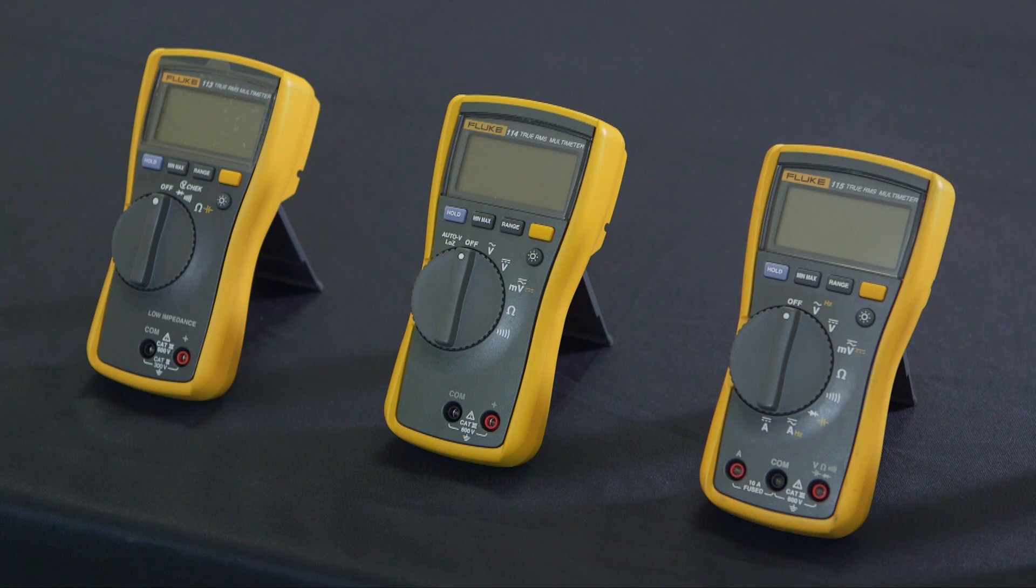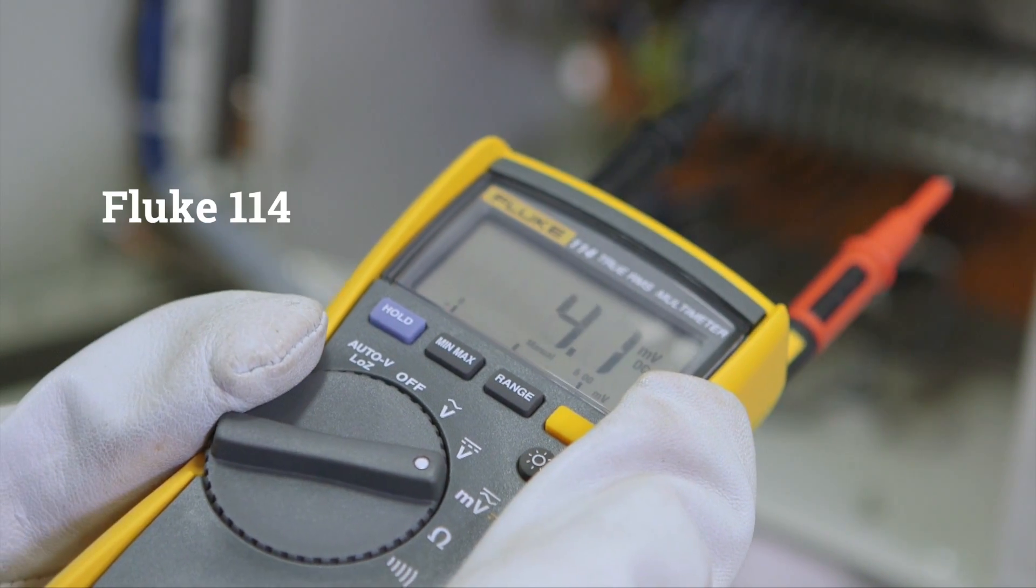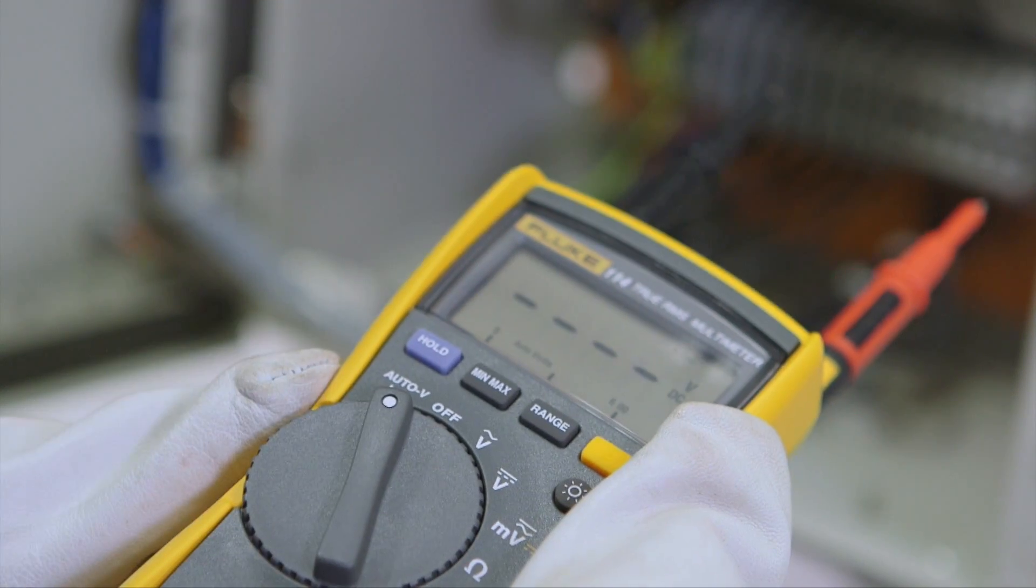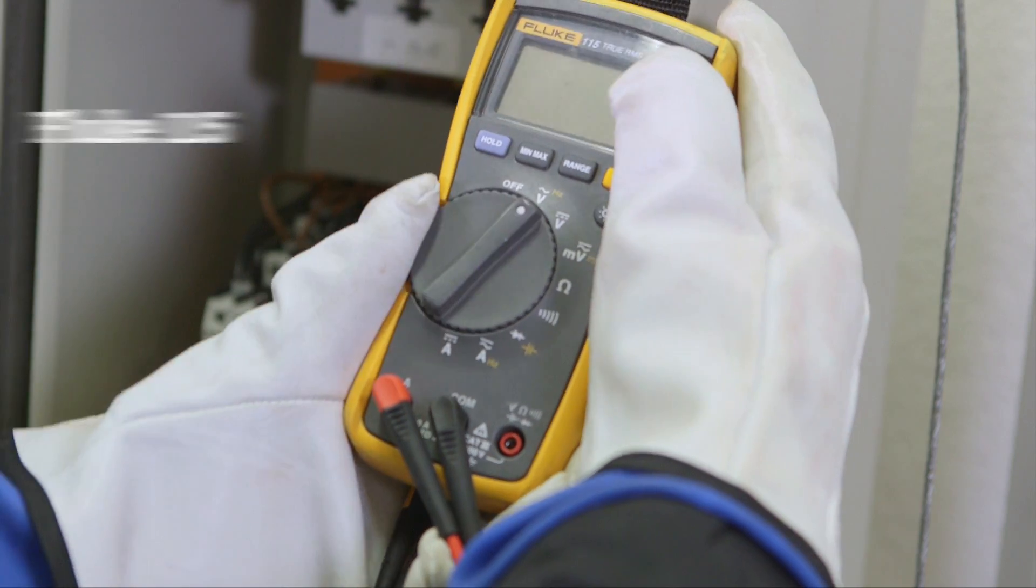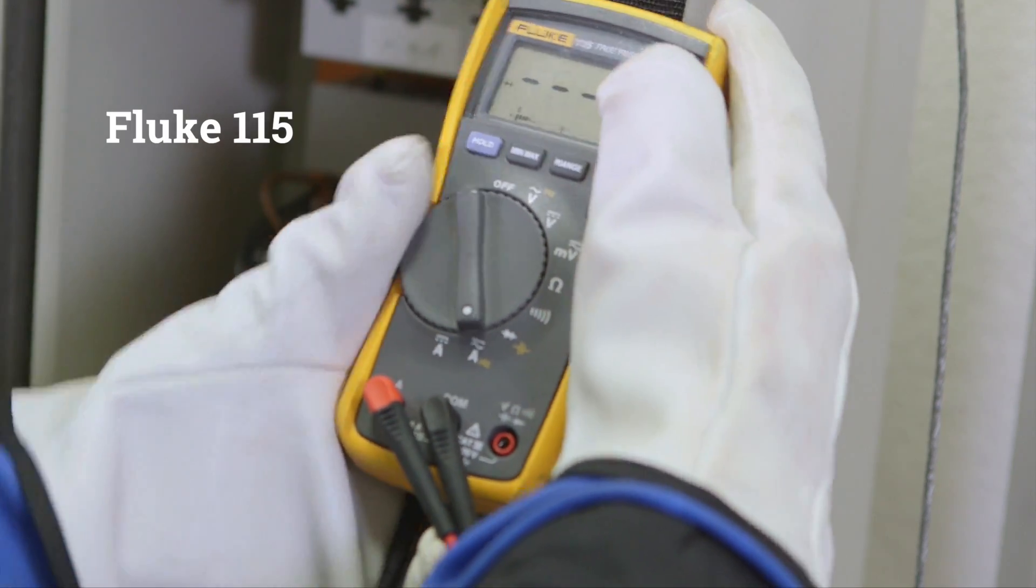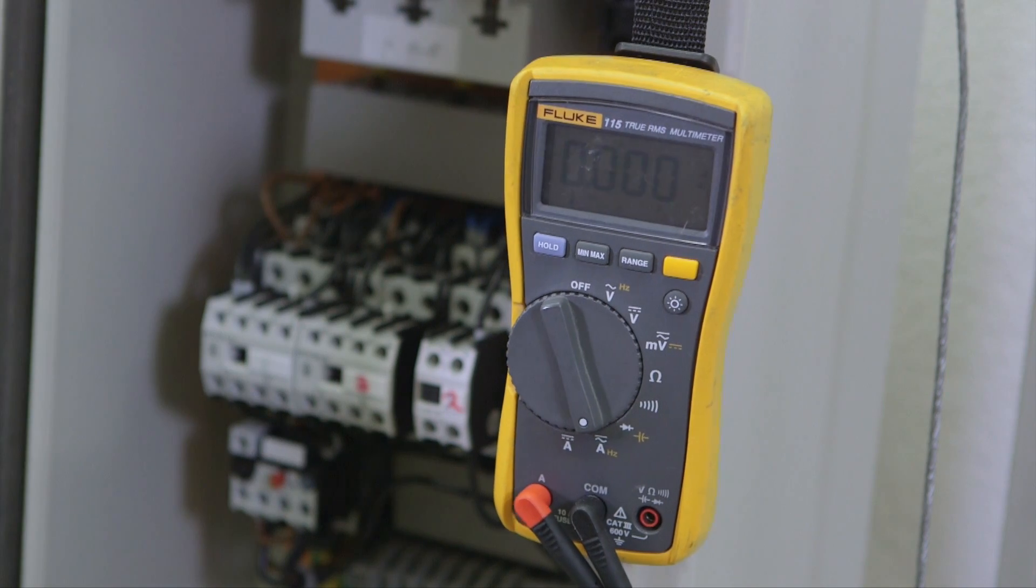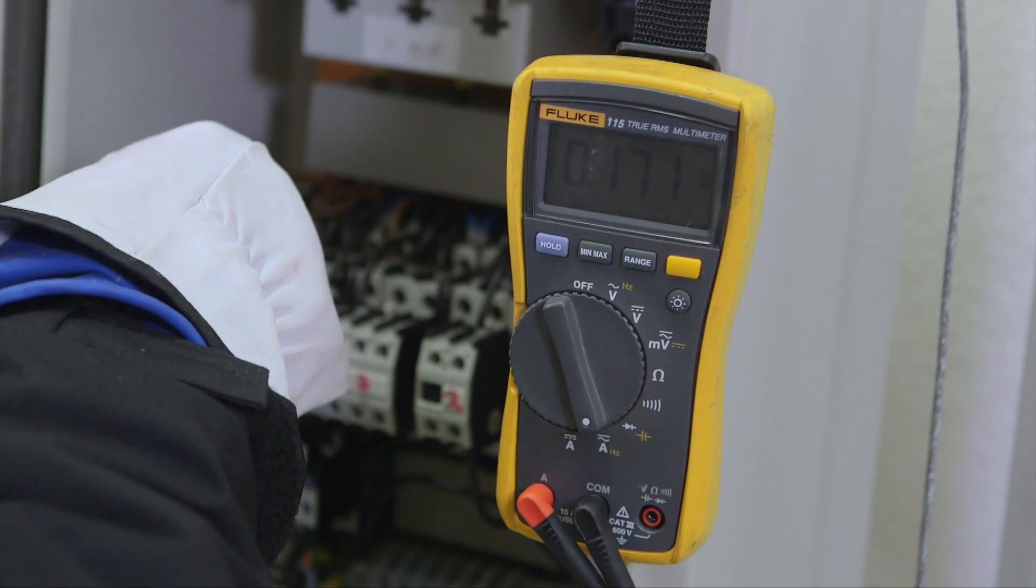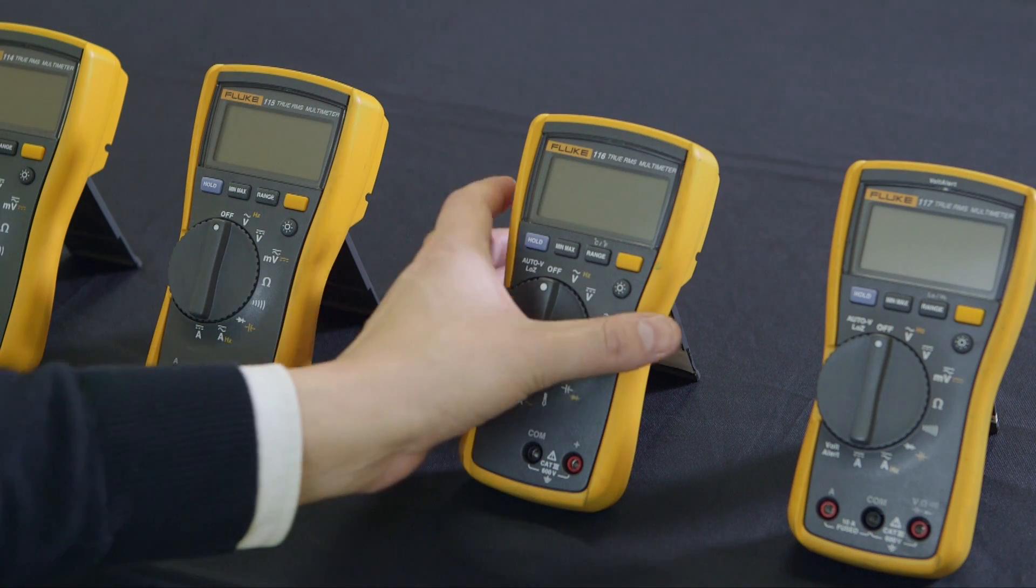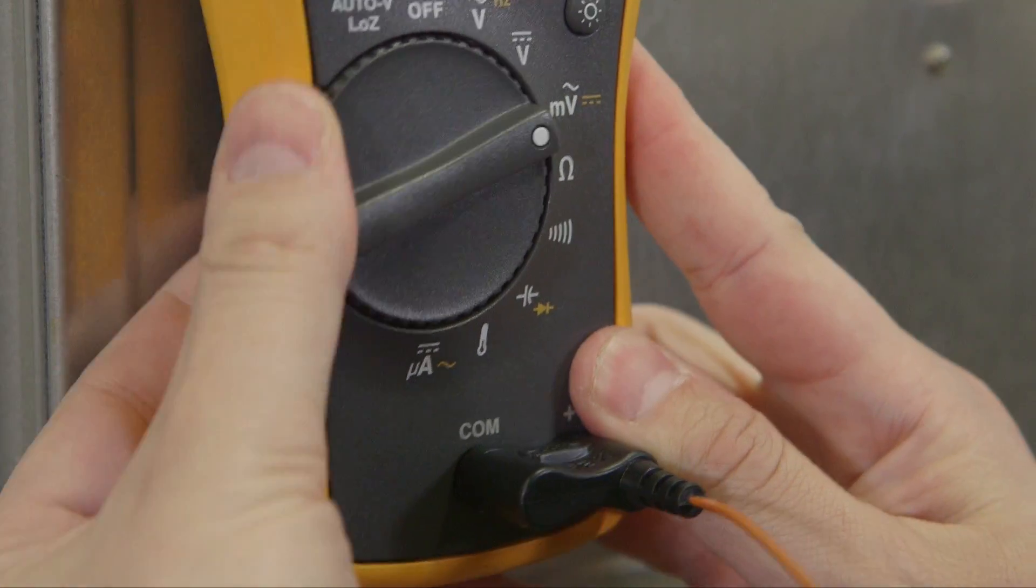The Fluke 114 has a Low Z feature that helps prevent false readings caused by ghost voltage. The Fluke 115 includes current measurement. The Fluke 116 was developed for troubleshooting heating, ventilation, and air conditioning equipment.